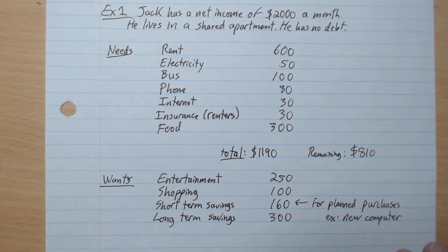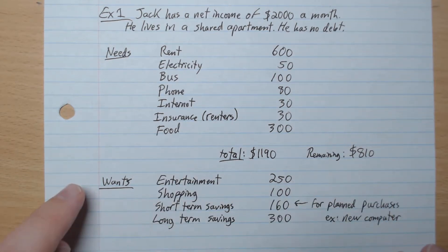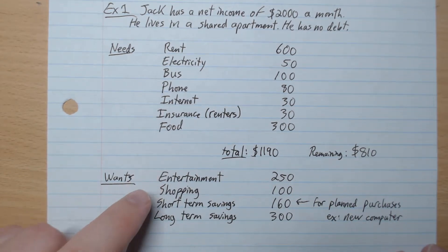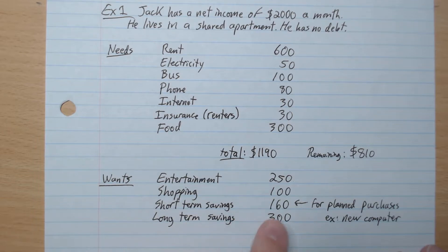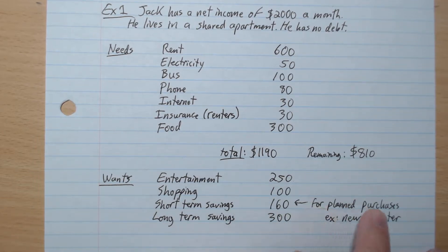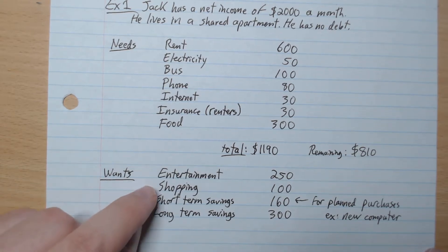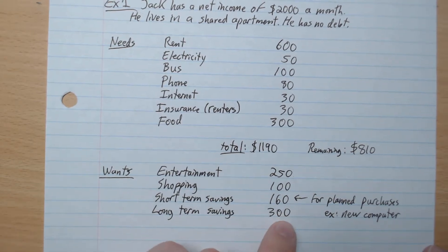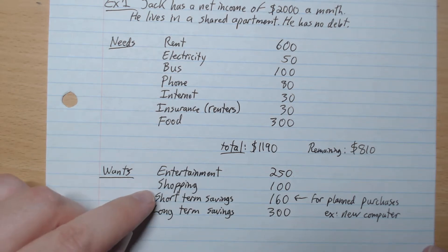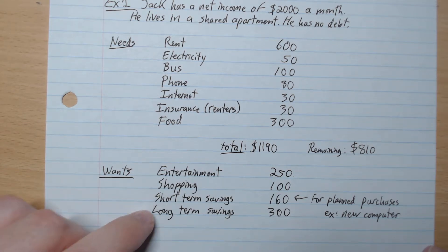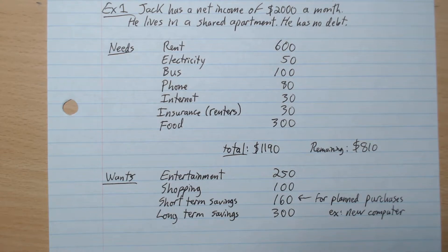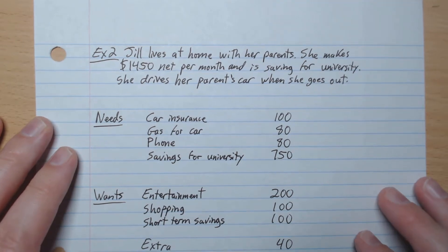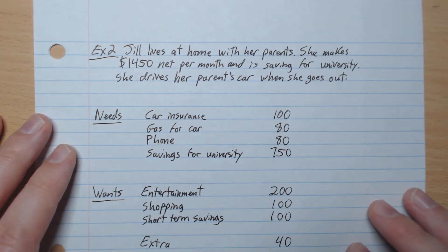That leaves $810 remaining. Jack splits that into wants: entertainment $250, shopping $100, short-term savings $160 — for planned purchases like a new computer — and long-term savings. We talked about this in banking basics: you can have one account for short-term savings and a different account for long-term savings. That's Jack's simple budget.